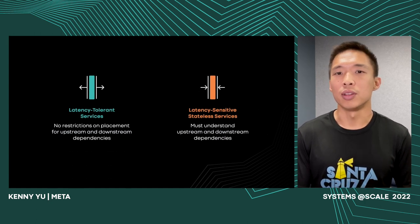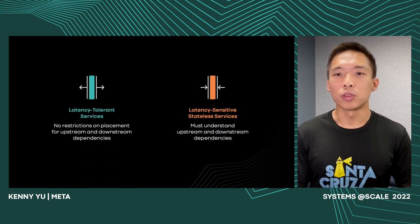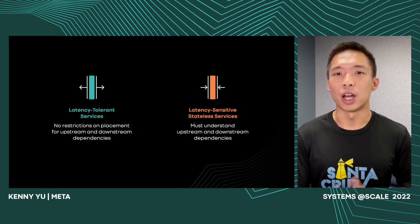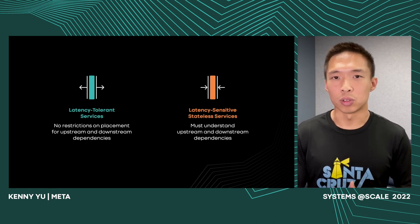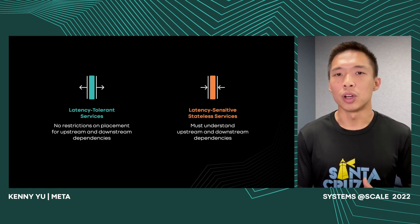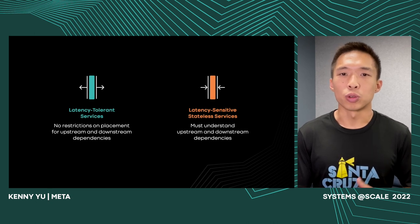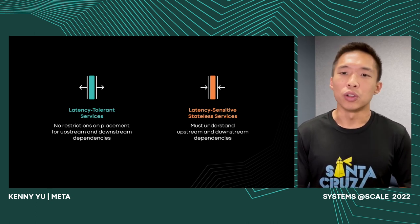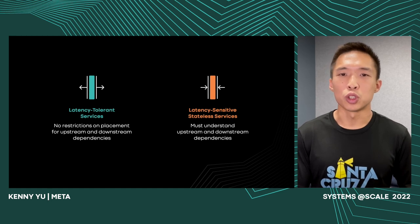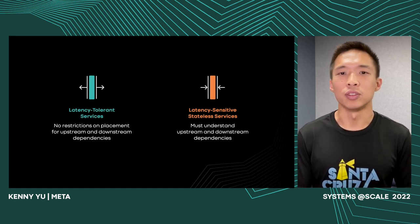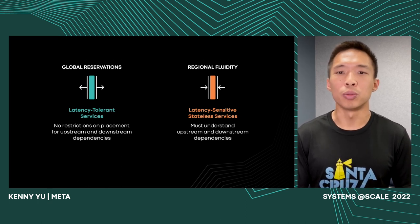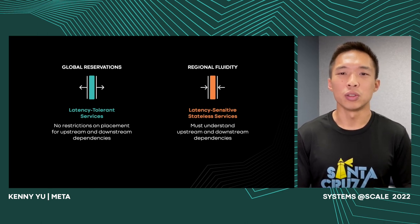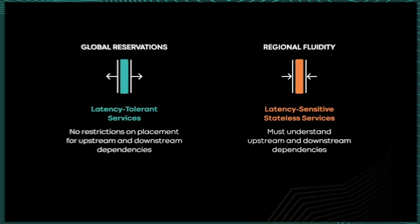In order to support latency sensitive services, we must consider the location of the services upstream and downstream of that service to make sure they're located nearby. These services cannot be independently moved from their dependencies. Whereas for latency tolerant services, we don't have this constraint, and we have full flexibility to change the placement of these services as needed. We built Global Reservations to simplify global capacity management for latency tolerant services, and we built Regional Fluidity for latency sensitive services.